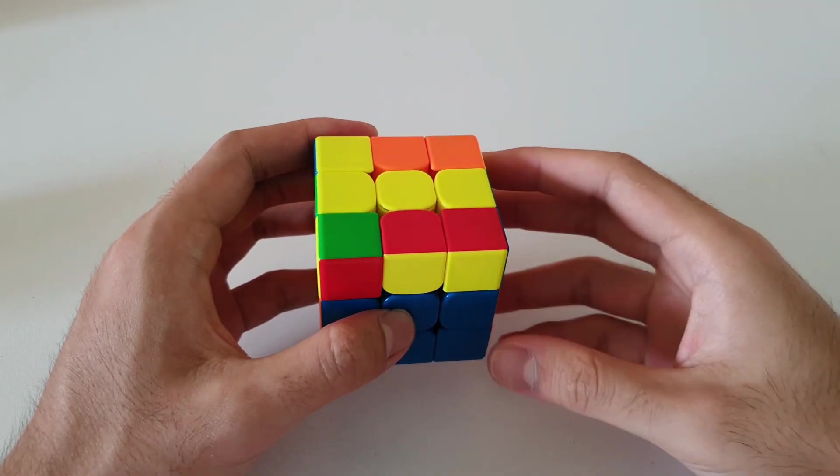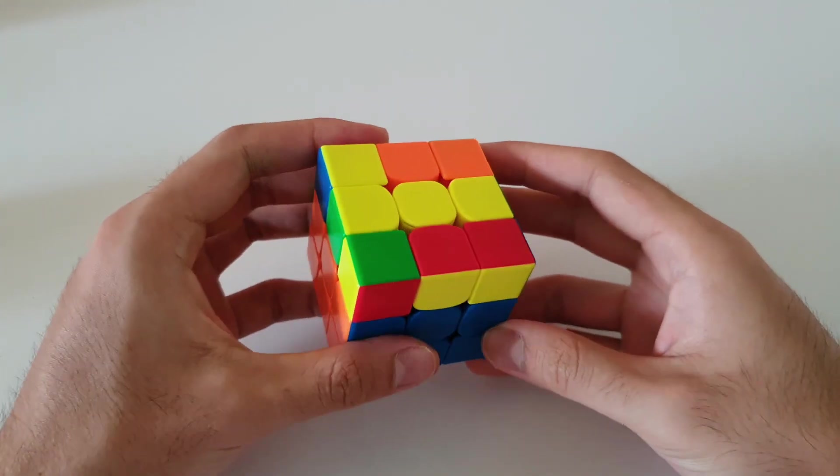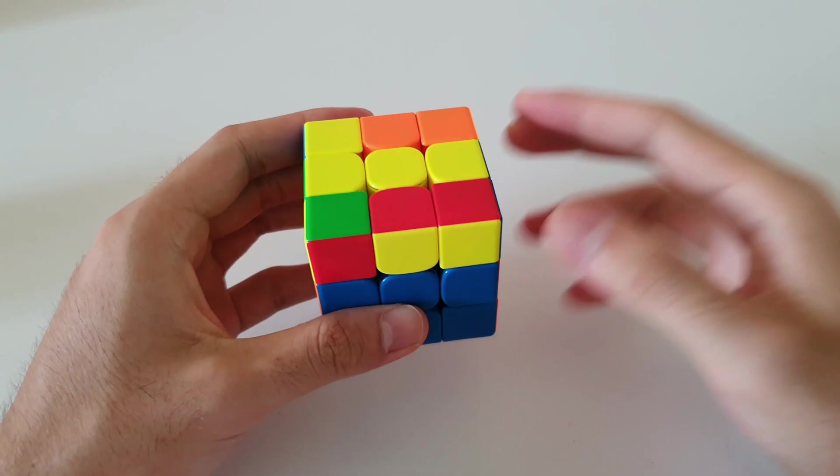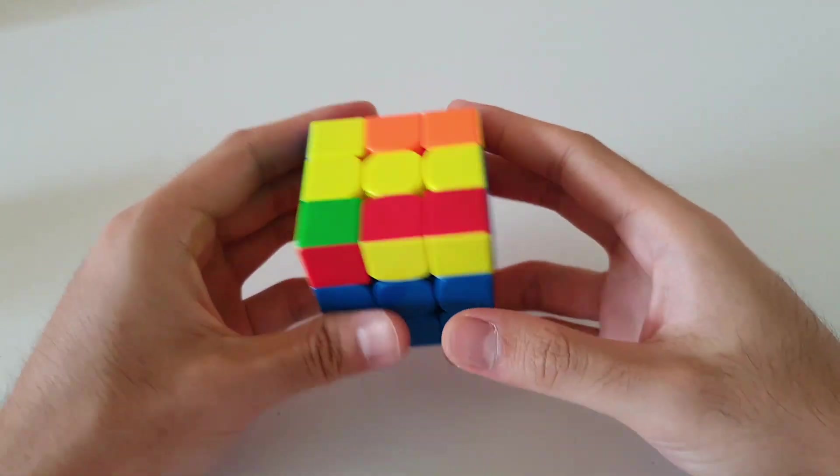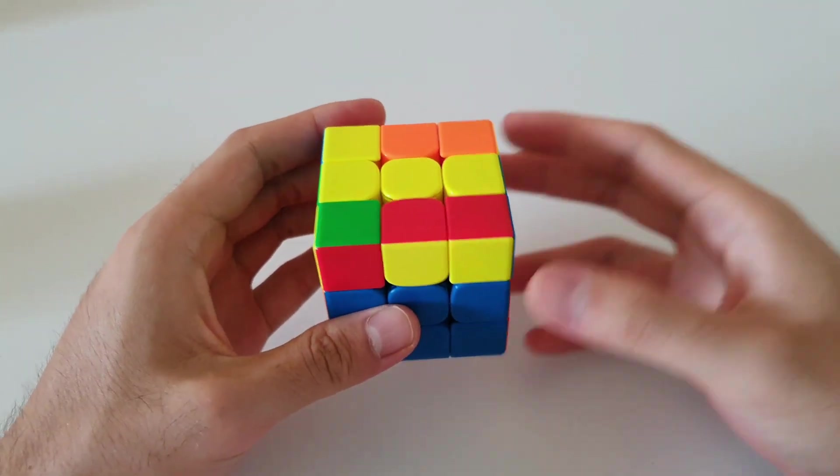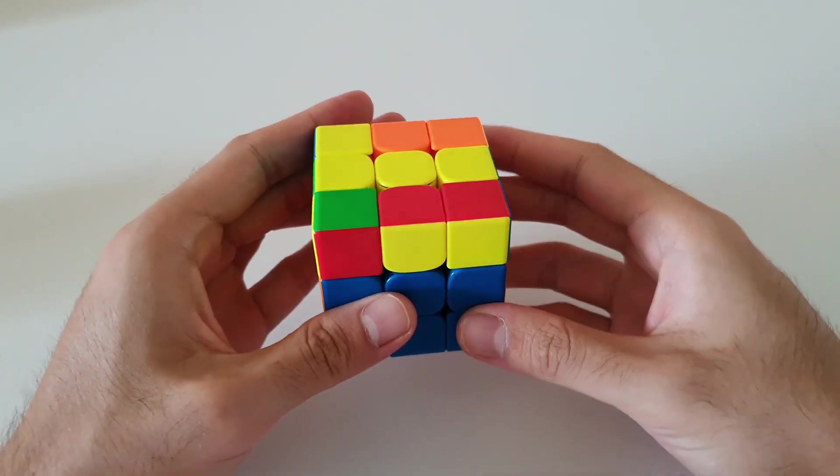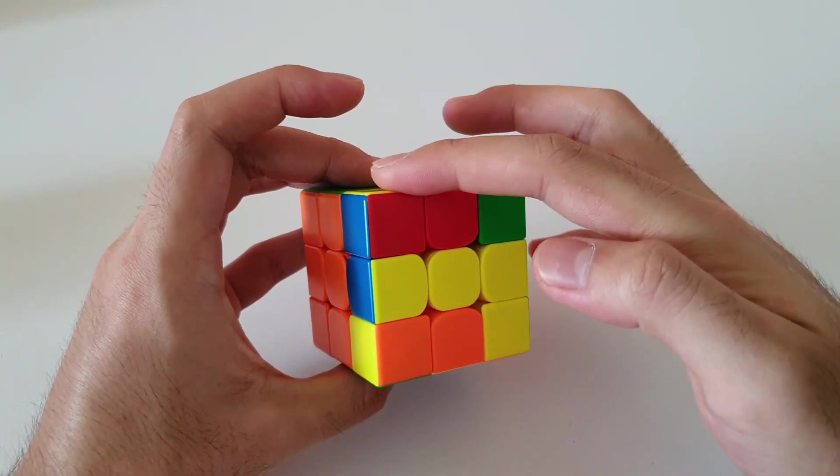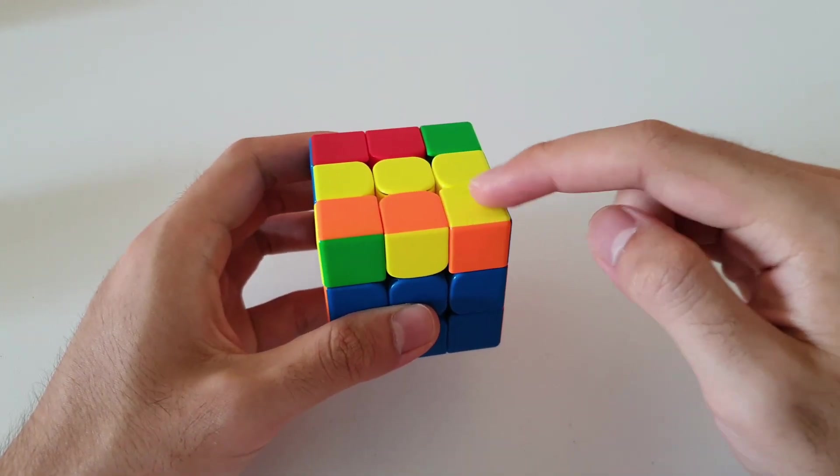And of course if you're not a big fan of left-handed algorithms, I'll show an alternative for this algorithm. It's pretty much the same algorithm but done from the back right instead of the front left. So in order to do that we want to hold this from the other direction, like this, with the 2x1 bar at the back and the corner at the front right.